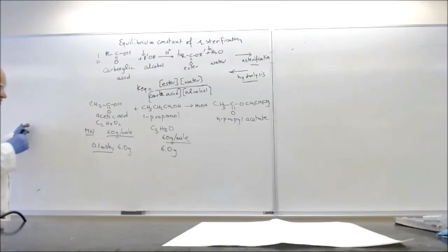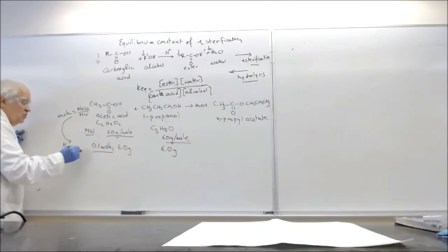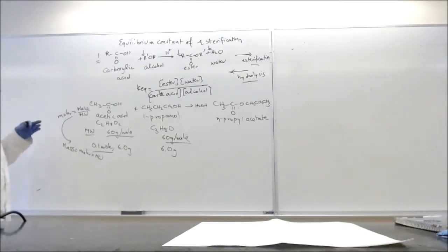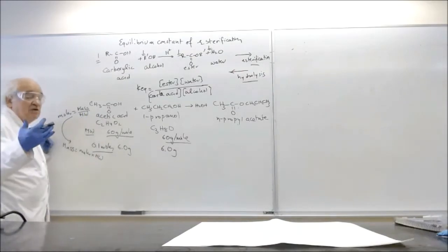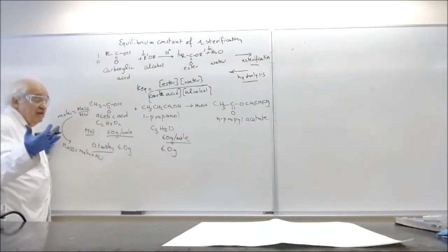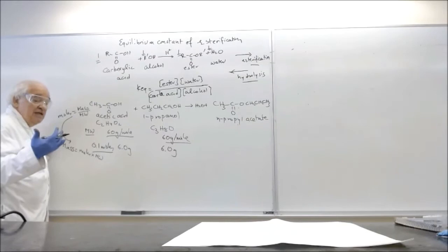Because remember, moles from general chemistry 1 is mass over molecular weight. So the mass here will be equal to moles times molecular weight. So it's going to be 0.1 times 60. The problem now we have in this case is that both acetic acid and propanol are actually liquids. And so therefore what we need to do is we need to have volumes.